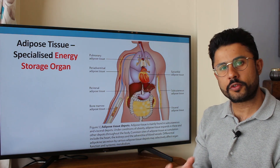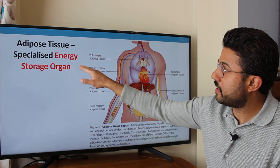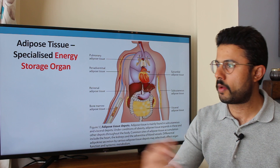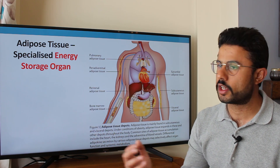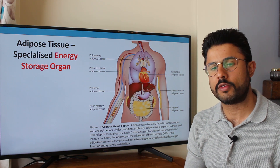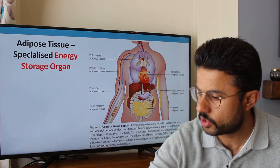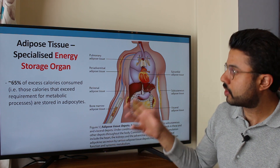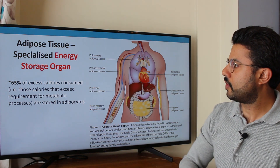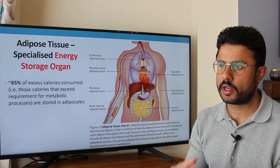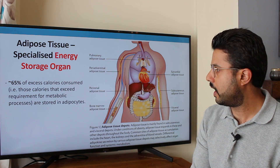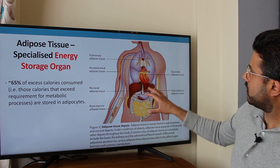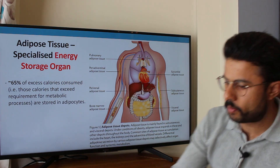The key part is that fat is stored in the body in the adipose tissue — basically an energy storage organ. Everything we eat that doesn't get used in energy expenditure gets stored there. Approximately 65% of excess calories consumed get stored in adipocytes. Once your resting metabolic rate, the energy needed to digest food, and physical activity are accounted for, remaining energy gets stored in the adipose tissue, deposited in different sites of the body.